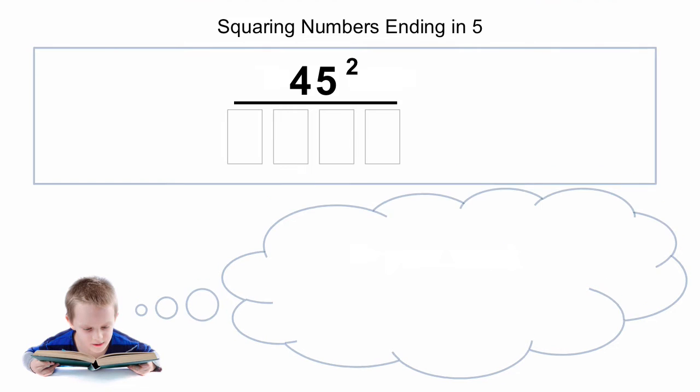Let's have a look at an example. We'll start with squaring numbers ending in five. Here we have 45. Because the number ends in five, we know that the answer is going to end in 25, because 5 squared is 25. So the last two digits of the answer for numbers ending in five will always be 25.